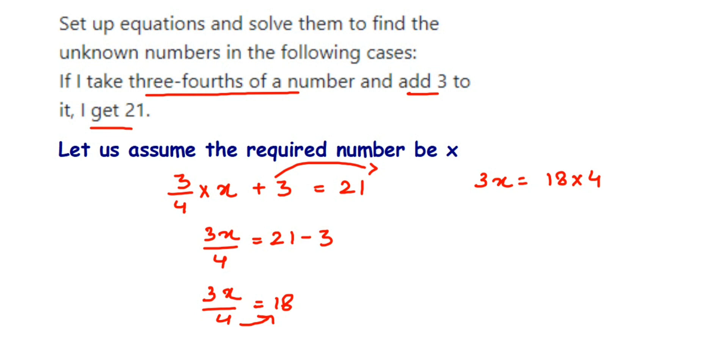3 will come in denominator here. Like 3 is in multiplication with x, when transposed it comes in division. So x will be equal to 18 multiplied by 4 divided by 3. Now the numbers will get cancelled. We have not multiplied, you can multiply and do it, this is no issue.